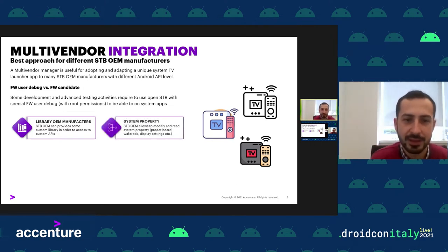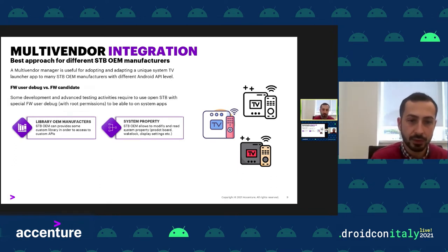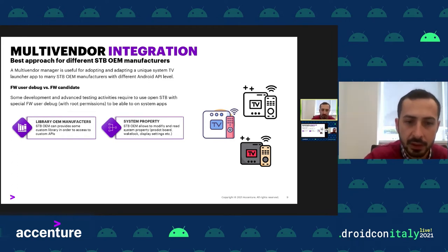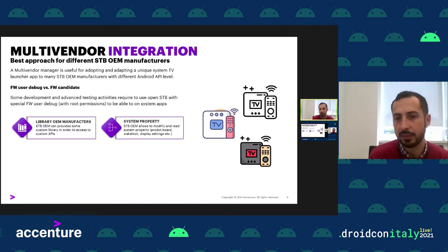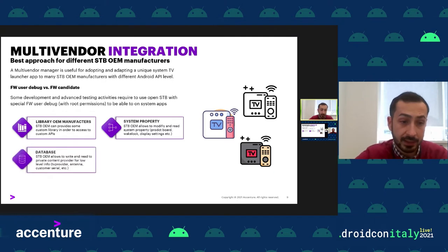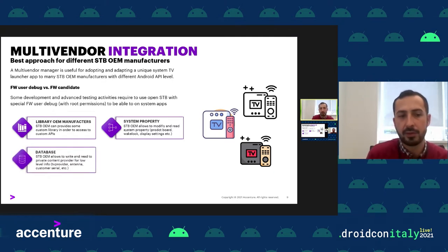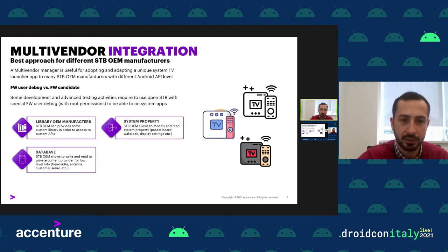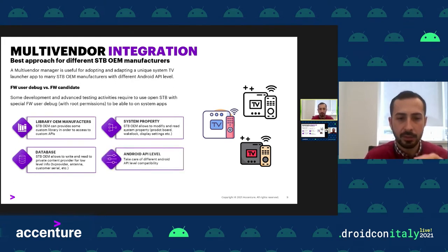Other vendor-specific capabilities include reading or modifying system properties — for example, the product board property to avoid installing the APK on other platforms — display settings, access to private content providers for low-level info such as the DVB provider for the antenna or customer numbers, and handling different Android API level compatibility.